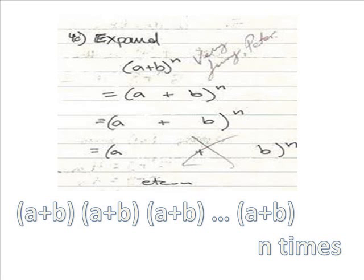The problem here says to expand. Expanding means removing the parentheses, but you have to do it right. To expand the quantity a plus b to the n, you would have to write it a plus b times a plus b times a plus b n times, which means the quantity of a plus b times the quantity of a plus b n times.